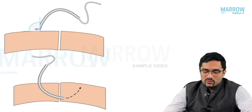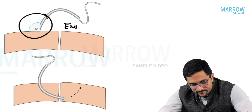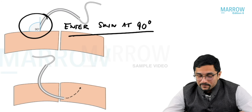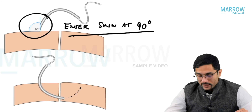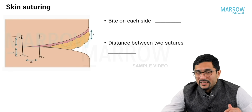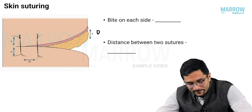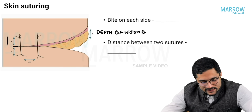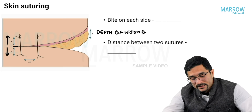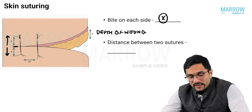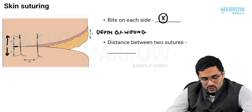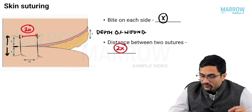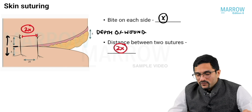Whenever we use a needle to take sutures, we always enter the skin at a 90-degree angle — this was asked in the INICT exam two and a half years back. Now, from Bailey's: x is the depth of the wound. The bite on each side of the midline or laceration needs to be x — equivalent to the depth of the wound. The distance between two sutures, which has been asked in exams, is 2x — two times the depth of the wound.